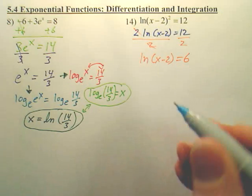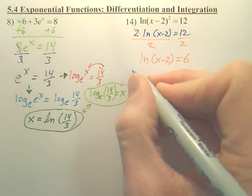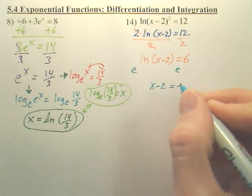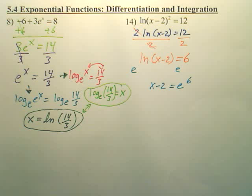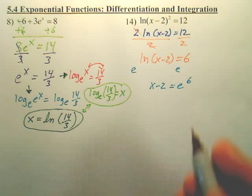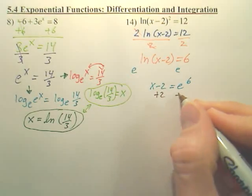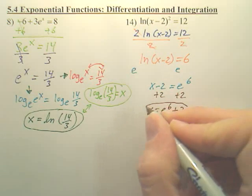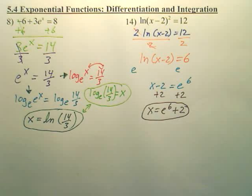Some of you like to exponentiate. So from here, some of you are going to want to do this. Put an e here, and an e here, and you get x minus 2 equals e to the sixth. That's cool. Then you just add the two over, x equals e to the sixth plus 2. That is a cool way to do it.